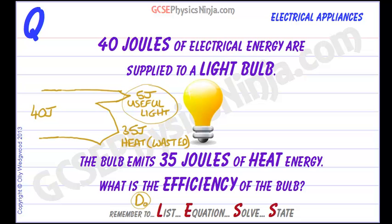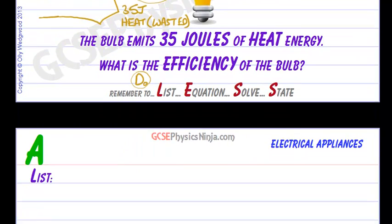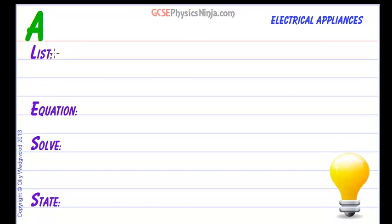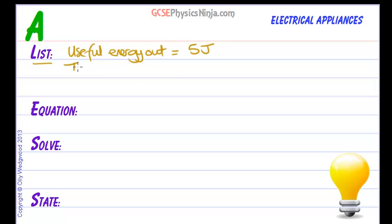Now that we know that 5 joules are useful and 40 joules are the input, let's list our data. The useful energy out is 5 joules. The total energy in is 40 joules — that is the electrical energy supplied to the light bulb. And what are we trying to find? We are trying to find the efficiency.